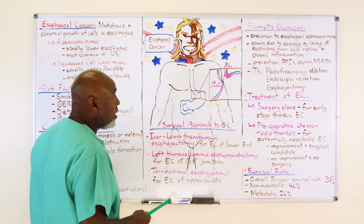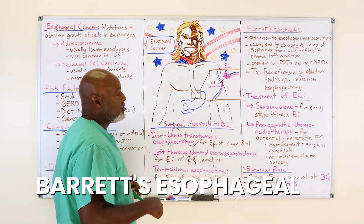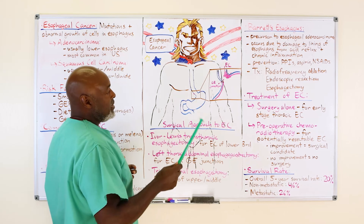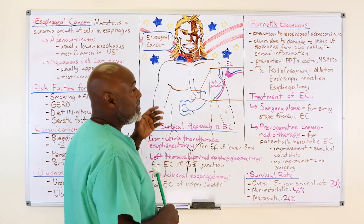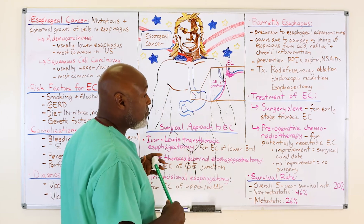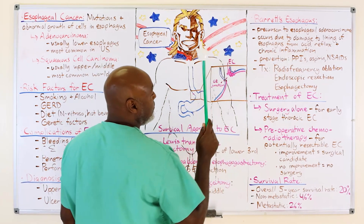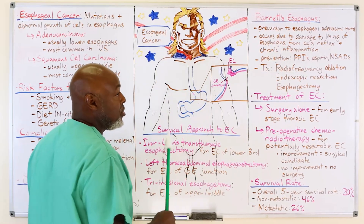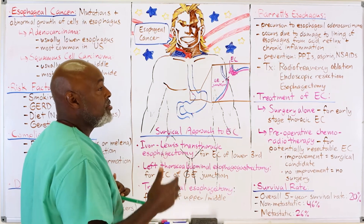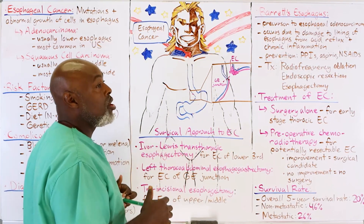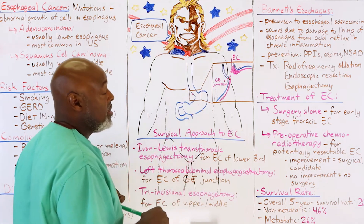You end up with gastric mucosa creeping up onto the esophagus to protect its lining from gastric acid. Having one mucosa on top of the other is not normal, so those cells start fighting each other constantly, increasing inflammation at the GE junction. That is essentially what Barrett's esophagus is. We worry about Barrett's esophagus because it is a precursor to adenocarcinoma of the esophagus. The easiest way to prevent progression is PPIs for bad reflux, or a Nissen fundoplication to decrease acid going up into the esophagus.